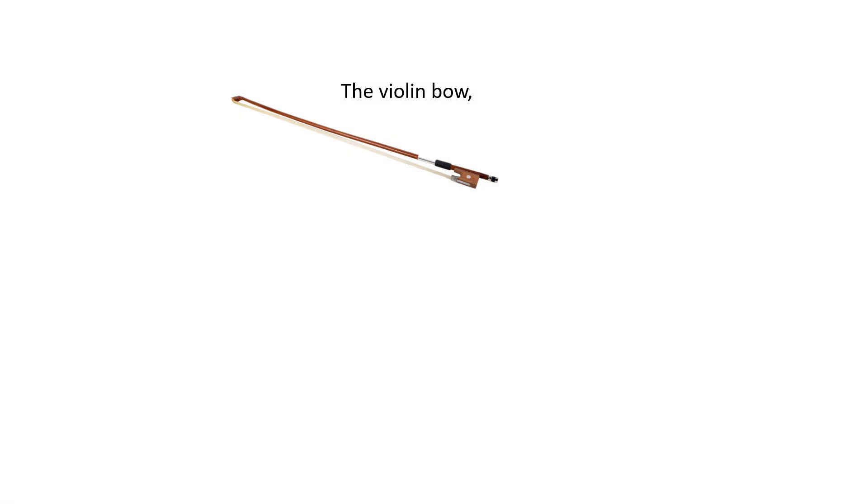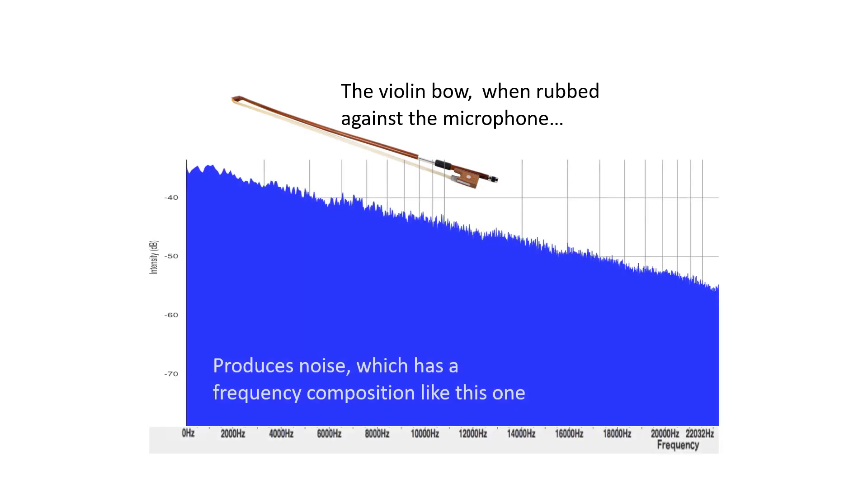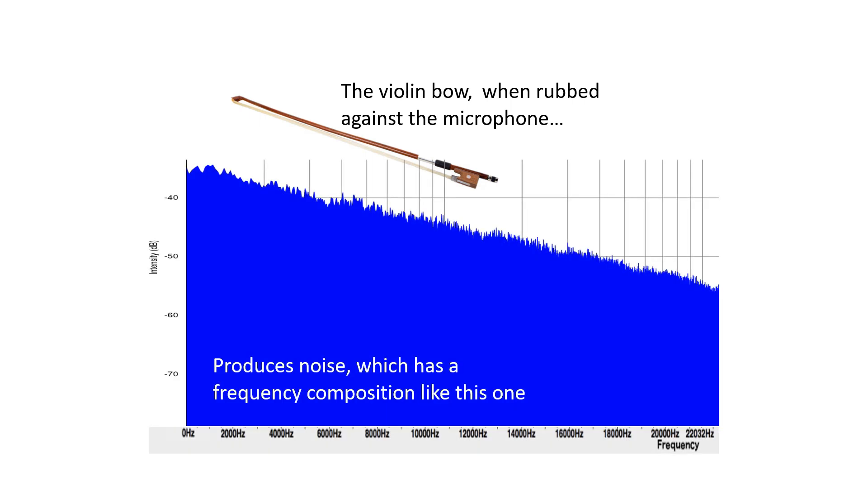The violin bow, when propped against the microphone, produces noise, which has a frequency composition like this one. The frequency composition of a sound is called its spectrum. Noise has a continuous spectrum, meaning that it has a frequency component on every frequency.